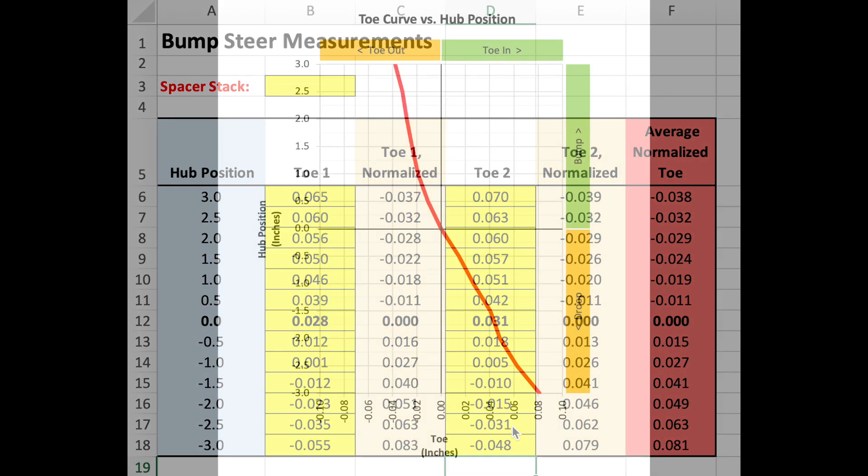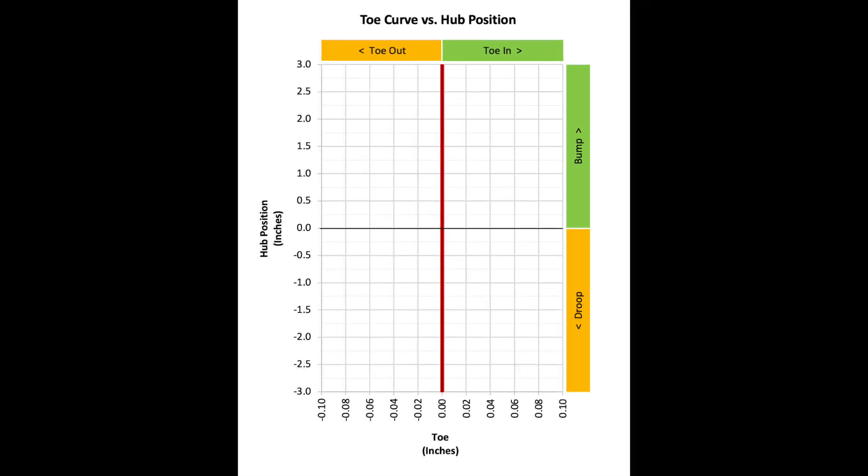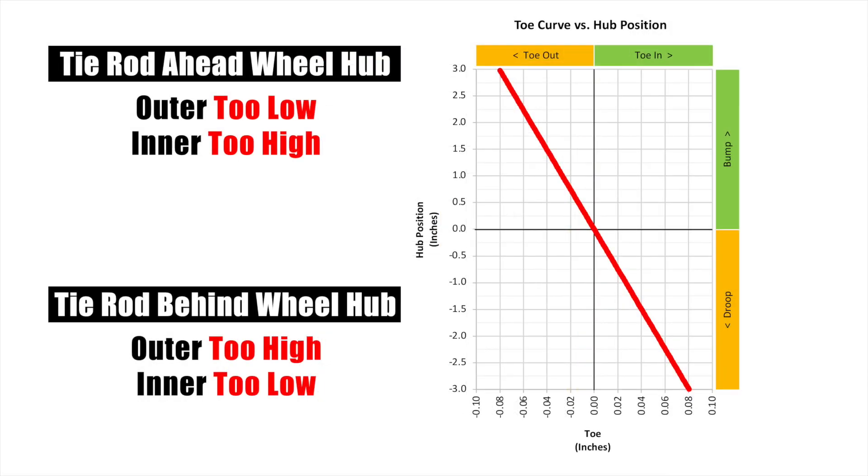Take a look at the graph when you're done. It may look something like this. But what does this mean? The goal would be a perfectly straight vertical line, but that's not going to be possible. You can change the shape of the bump steer curve by changing the heights of the spacer stack.